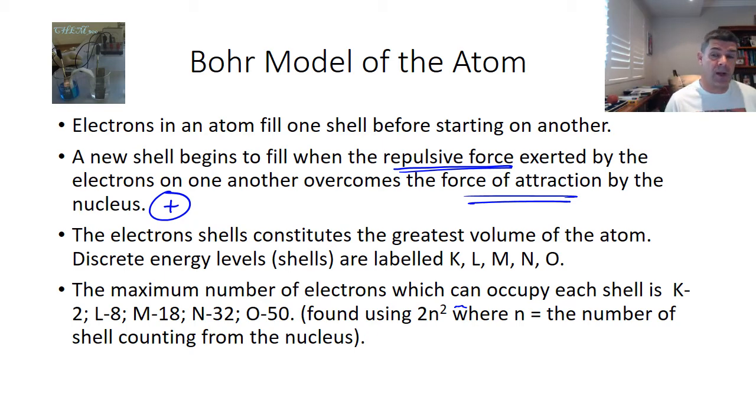The maximum number of electrons which can occupy each shell are 2 for the first, 8 for the second, 18, using that formula 2n squared, which is what we talked about in a previous video.